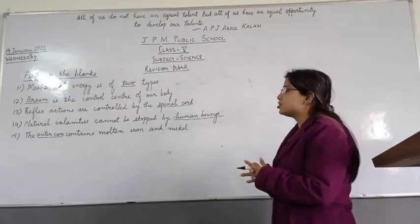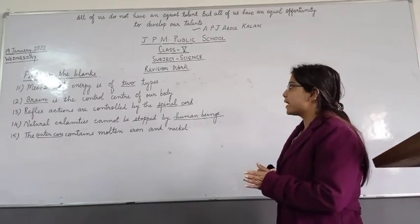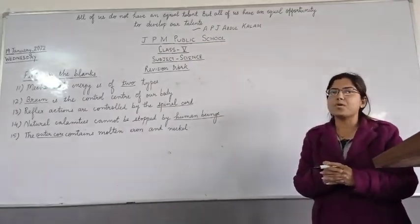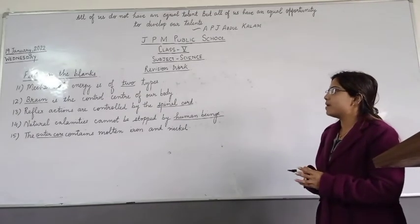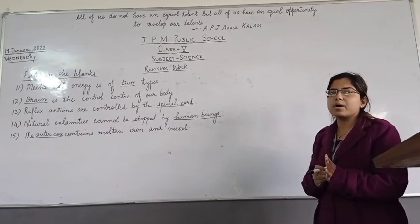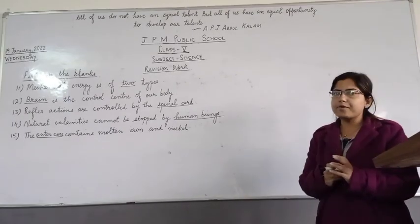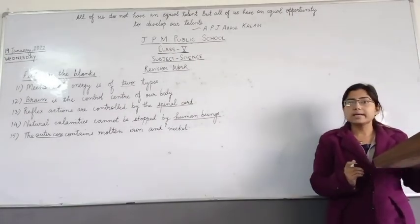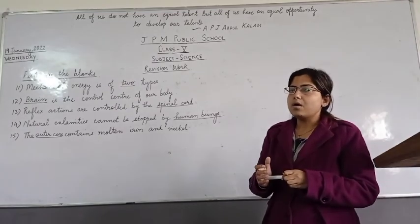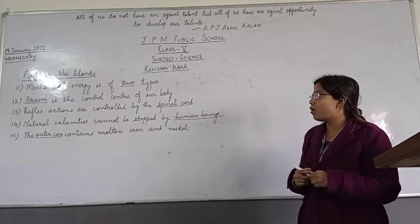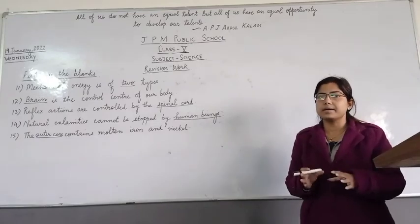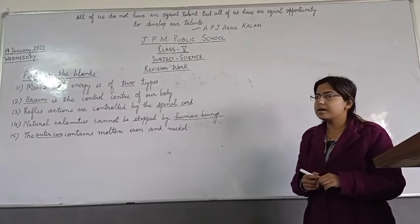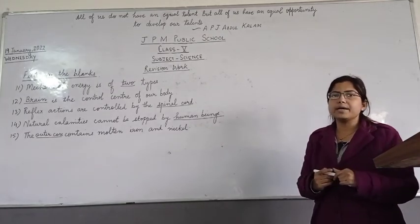So to recap: number eleven, mechanical energy is of two types; number twelve, brain is the control centre of our body; number thirteen, reflex actions are controlled by the spinal cord; number fourteen, natural calamities cannot be stopped by human beings; number fifteen, the outer core contains molten iron and nickel. Now you all have to do these 15 fill in the blanks in your science notebooks today. This is your homework and you all have to learn it today only. This is the revision for the unit test. Write it down, class, and send your work in the evening to me.